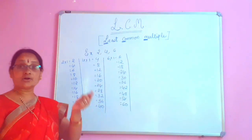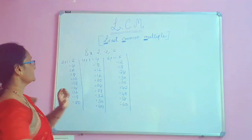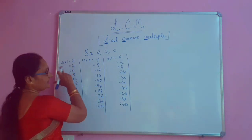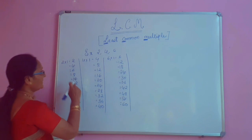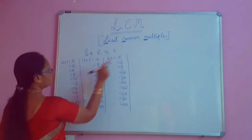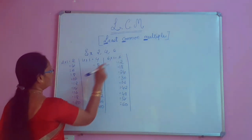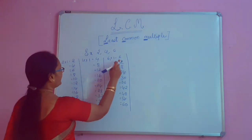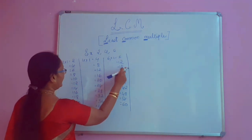Now we find out common multiples among these. Which are the common multiples? In all 3, there must be common multiples. See: 2, 4, 6 — then 4, 8, 12 — then 6, 12, 18.